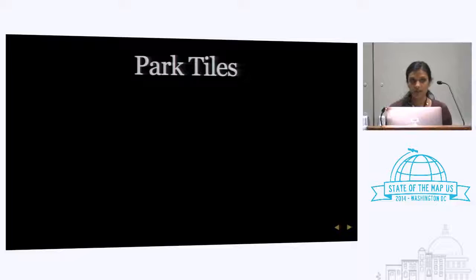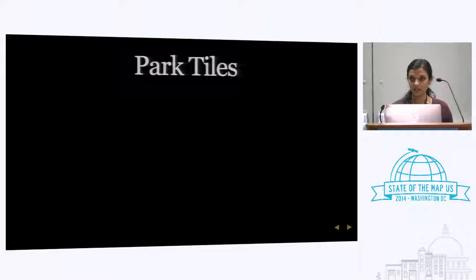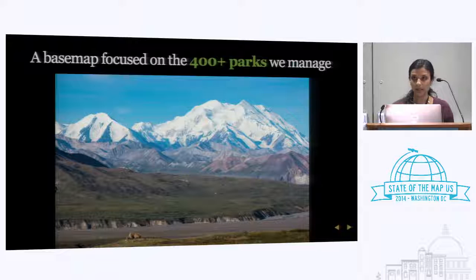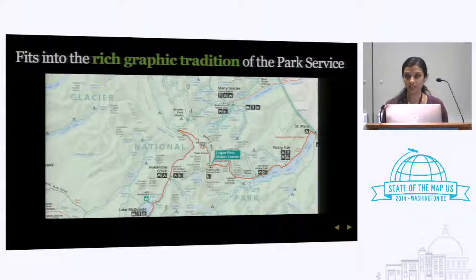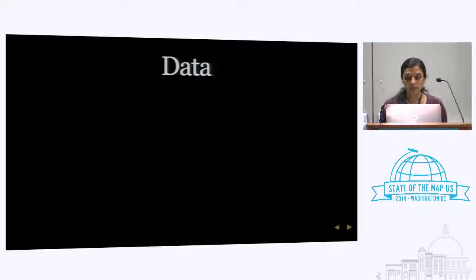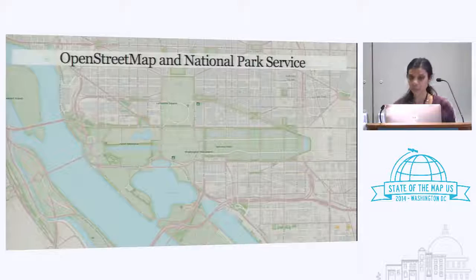But as new tools have emerged, and as we've gotten our data situation figured out a bit better, we're excited to share our new base map that now goes down to zoom level 19. Park Tiles is a base map meant to focus solely on the special places around the country that the National Park Service manages. It's also meant to fit into the rich graphic and cartographic traditions of the National Park Service. The data we're using is OpenStreetMap combined with National Park Service data.